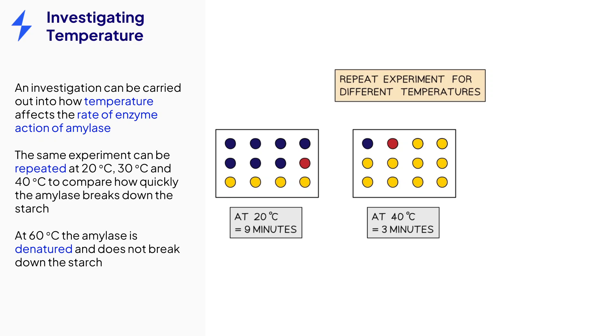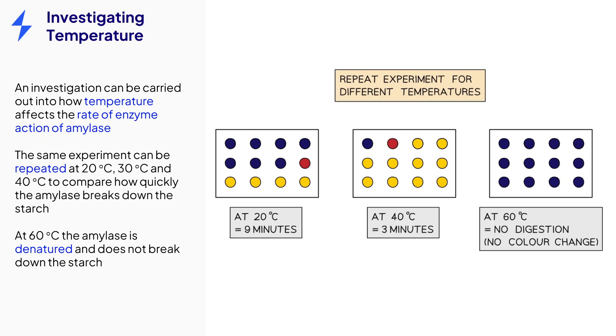At 40 degrees, the kinetic energy is higher, and it only takes 3 minutes for all the starch to be broken down. At 60 degrees, the iodine turns blue-black for the whole experiment. This is because the amylase is denatured, and so none of the starch is broken down to maltose.